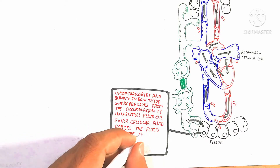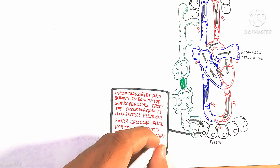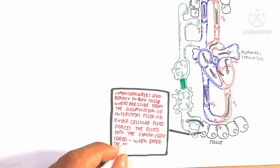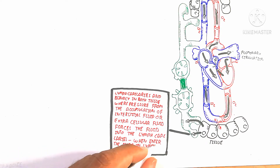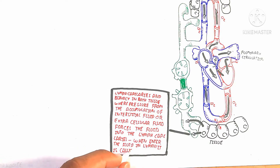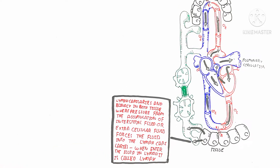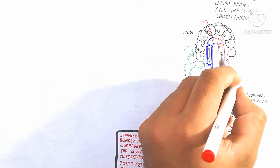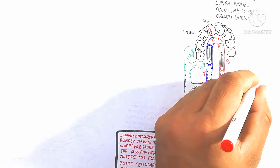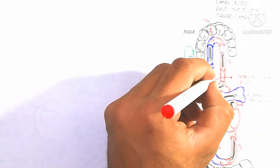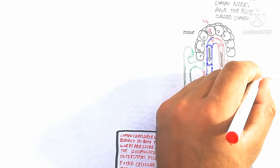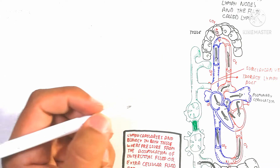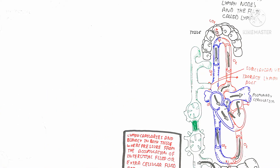When fluid enters the lymphatic system, it is called lymph. This lymph is absorbed from the excess extracellular fluid. If excess fluid is not absorbed, fluid accumulates in the tissue and muscle — this is known as edema, meaning excess water in the tissue — indicating that the lymphatic system is not functioning well.